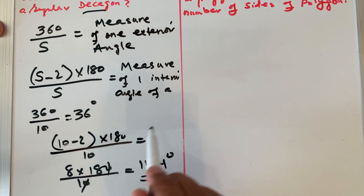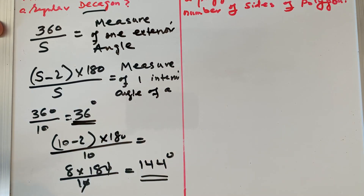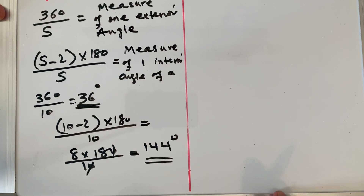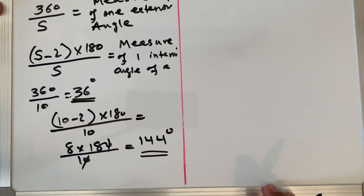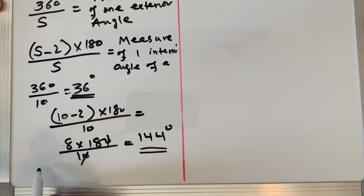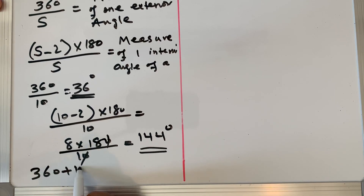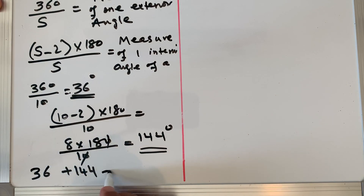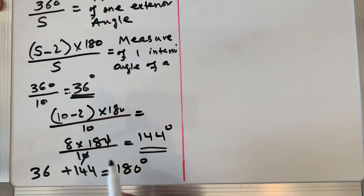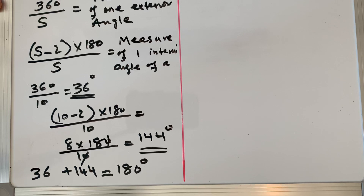We also learned that the interior angle and exterior angle should sum to 180 degrees — this is our check to verify the solution is correct. So 36 plus 144 equals 180, which confirms our answers are correct.